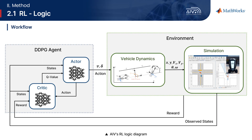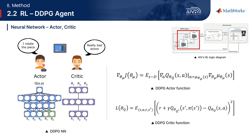The reinforcement learning logic we designed operates as follows. Learning occurs through the interaction between a DDPG agent, consisting of an actor and a critic, and an environment composed of vehicle dynamics and simulation. The actor delivers actions to the environment, and the observations and rewards generated from the AMR's behavior in the environment are fed back into the agent. The actor commands the actions for the agent to perform, while the critic provides feedback to the actor regarding those actions. Each network updates its parameters at every step according to the following equations.